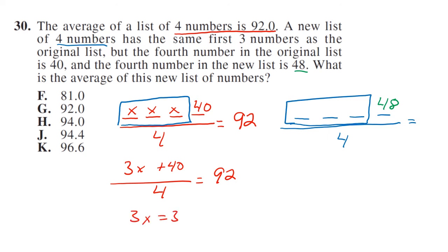All right, so all these 3x together equal 328. We could solve for x if we wanted to, we really don't need to, because we know that these three x's together equal 328. So 328 plus 48 divided by 4 equals what? And that's going to equal 94. So your answer is H.